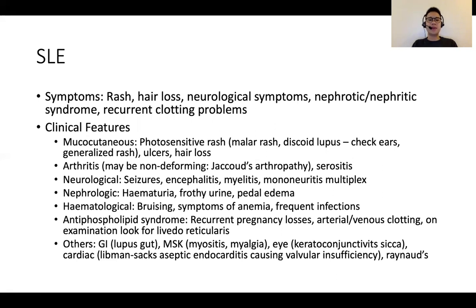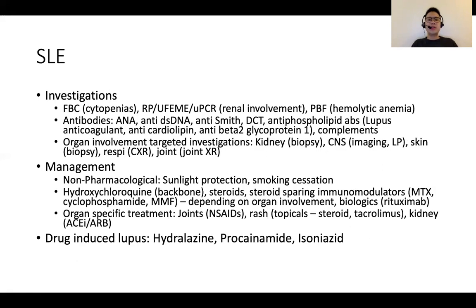It's worthwhile inspecting for the presence of livedo reticularis. SLE can affect the GI and MSK systems among others. Investigations are linked to the systems affected: full blood count for hematological involvement, renal panel, urine microscopy, urinary protein-to-creatinine ratio, and peripheral blood film looking for hemolysis. Key antibodies forming part of the diagnostic criteria include anti-nuclear antibody, anti-double-stranded DNA, anti-Smith, direct Coombs test, antiphospholipid antibodies (lupus anticoagulant, anti-cardiolipin, anti-beta-2-glycoprotein), and complements may be low. Further organ-specific investigations can be pursued as indicated.